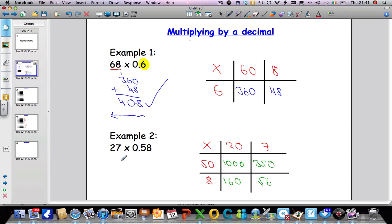So take all four numbers in green and add them all up. So we're going to do 1000, I'm going to add 350, I'm going to add 160, and I'm going to add 56.